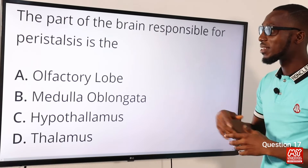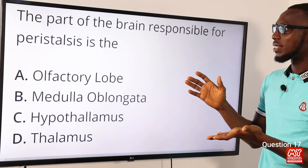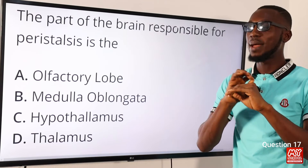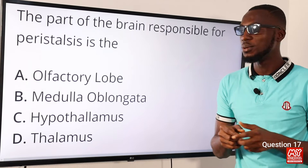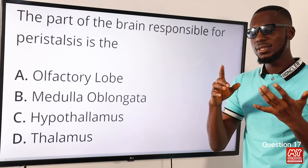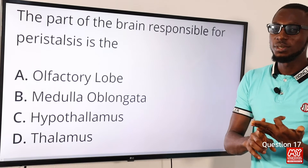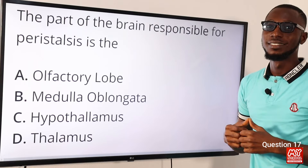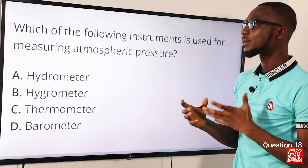Question seventeen: the part of the brain responsible for peristalsis is what? Peristalsis relates to the digestive system. The hindbrain comprises the cerebellum, pons varolii, and medulla oblongata. Functions of the medulla oblongata include involuntary activities like respiration, heartbeat, and digestion. So the correct option is option B for medulla oblongata.